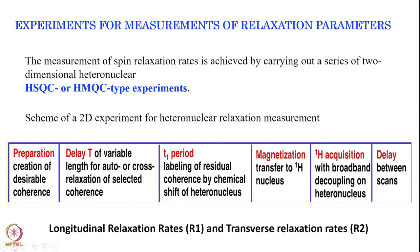The experiment for measurement of relaxation parameters in proteins basically uses HSQC or HMQC-based experiments. As we discussed, proton relaxations are complicated, therefore we measure on heteronuclei like 13C or N15. The scheme for all these 2D heteronuclear relaxation measurements is simple: like any 2D experiment, we start with a preparation state creating a desirable coherence, then introduce a time delay of variable length which captures the auto or cross-correlation rate of this selected coherence.